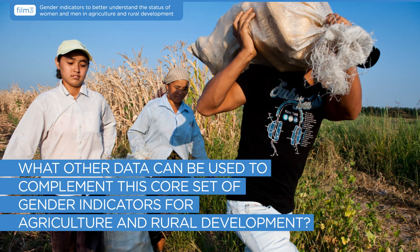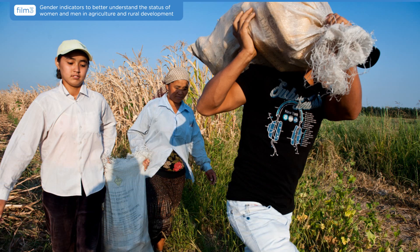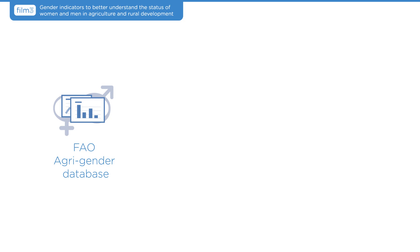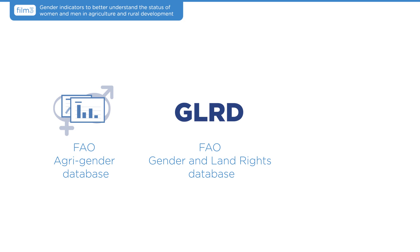Other FAO resources to complement this core set include the FAO Agri-Gender Database, a toolkit for the production of gender-sensitive agricultural data; the FAO Gender and Land Rights Database, which provides information about limitations women experience in access to land; and the FAO Legislation Assessment Tool, which offers 30 indicators for measuring progress towards gender equity in land tenure in national policy and legal frameworks. All of them, inclusive of the core set presented in this toolkit, are available at www.fao.org/gender.